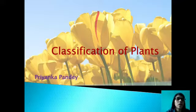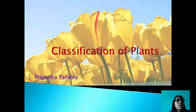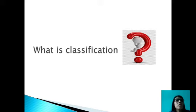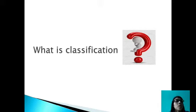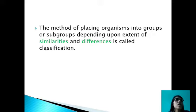Hi students, myself Priyanka Pandey and today I am going to explain classification of plant kingdom. Before explaining the classification of plant kingdom, first the question before us is: what is classification? Classification is a process of placing organisms into groups or subgroups depending upon the extent of similarities and differences. In simple terms, creating groups on the basis of similarities or differences is known as classification.